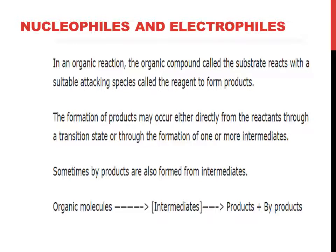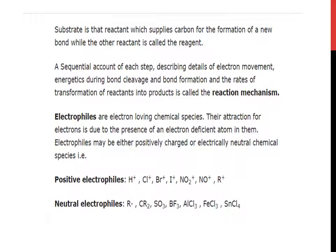Nucleophiles and Electrophiles: In an organic reaction, the organic compound called the substrate reacts with a suitable attacking species called the reagent to form products. The formation of products may occur either directly from the reactants through a transition state or through the formation of one or more intermediates. Sometimes by-products are also formed from intermediates. The substrate is the reactant which supplies carbon for the formation of a new bond, while the other reactant is called the reagent. A sequential account of each step describing details of electron movement, energetics during bond cleavage and bond formation, and the rates of transformation of reactants into products is called the reaction mechanism.